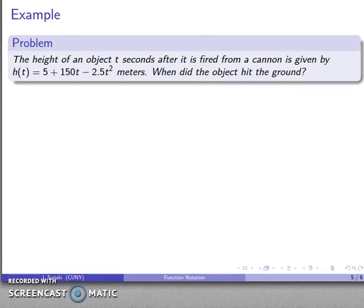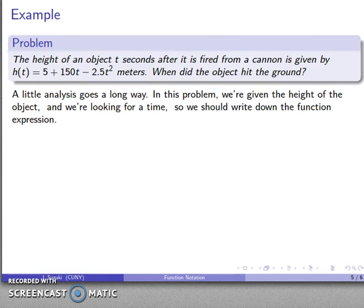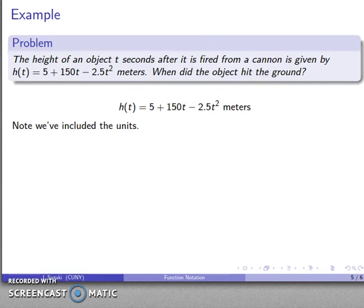Well, here's another problem. The height of an object after t seconds is going to be given by some formula. When did the object hit the ground? Again, a little bit of analysis goes a long way. In this problem, we're given the height of an object. And so, we know something about the height of the object. And we're looking for a when. So, that suggests a time. And again, what that suggests is we should begin by writing down our function expression. Once again, notice that we've included the units of our expression.